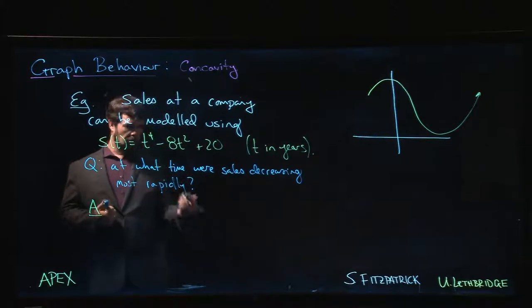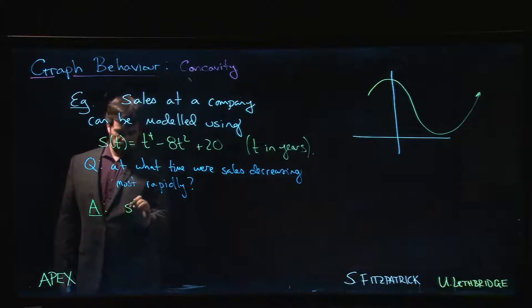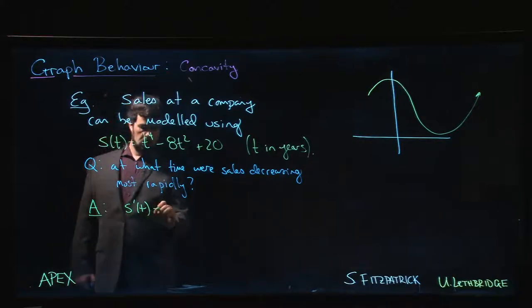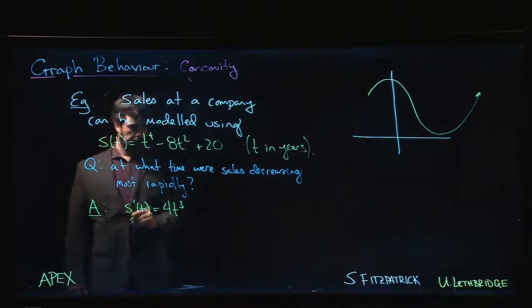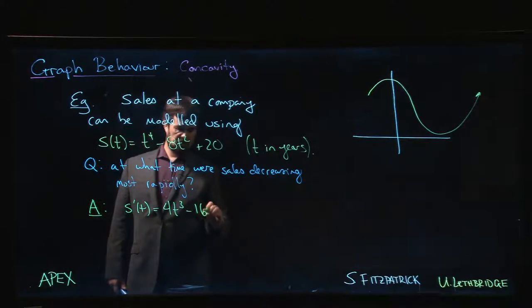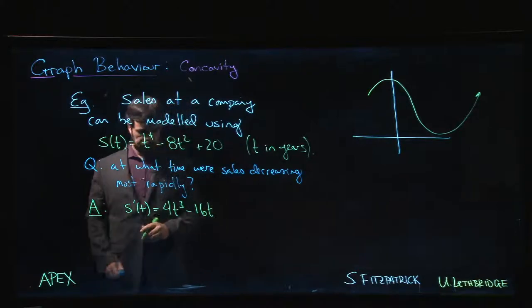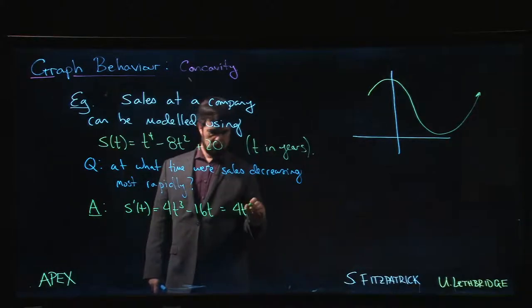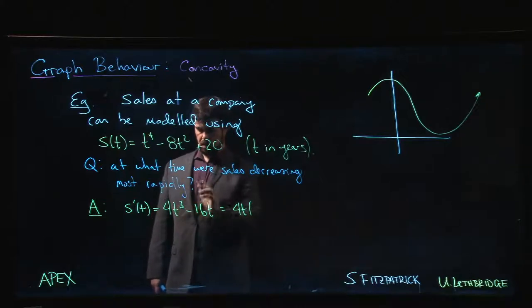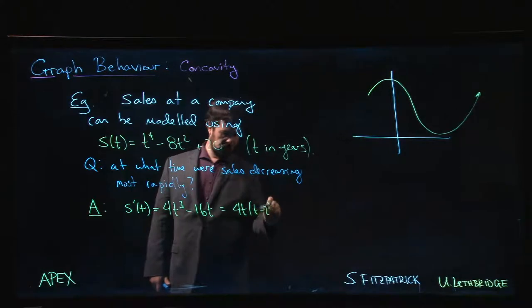We need to calculate some derivatives. We calculate S'(t) and get 4t³ - 16t. If we factor, we get 4t times (t² - 4), which is 4t(t - 2)(t + 2).